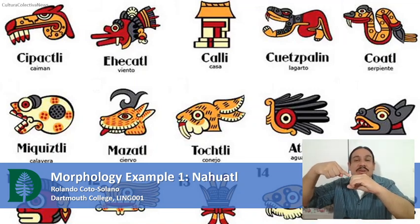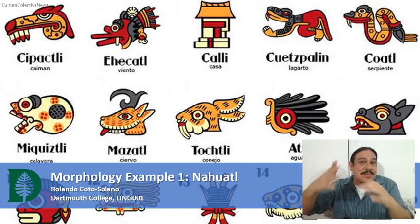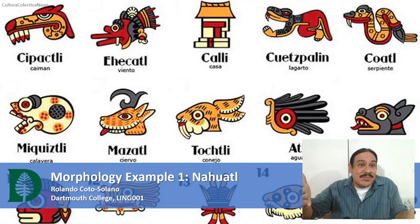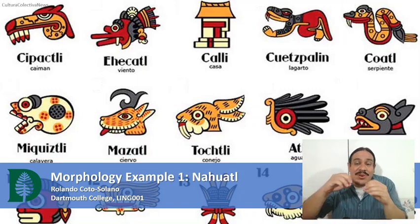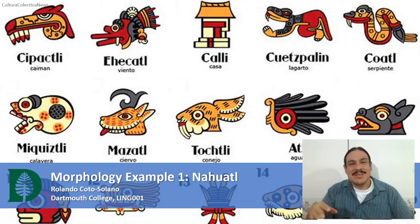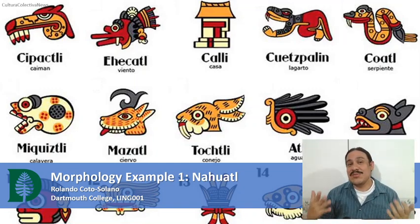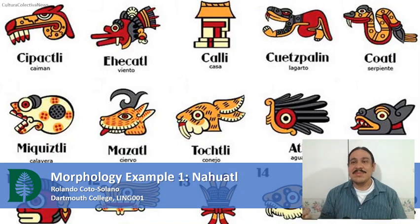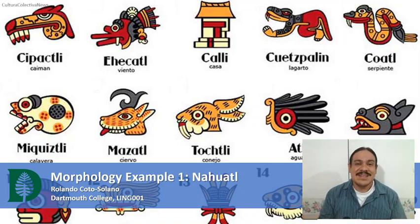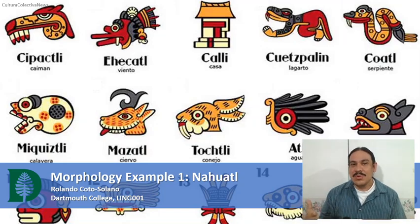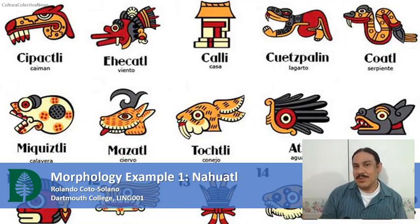We know this because we speak English, and we know that these two parts mean different things. But how can we know this in a different language? We do this by observing patterns. And here we're going to try an example with the Mexican language Nahuatl.